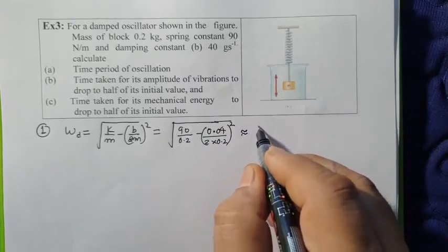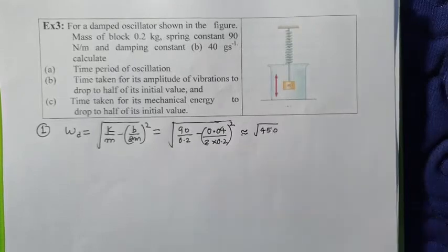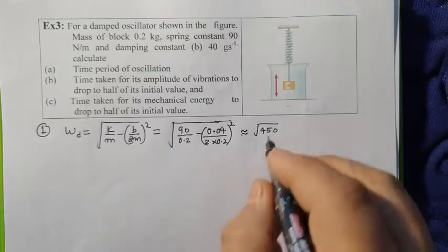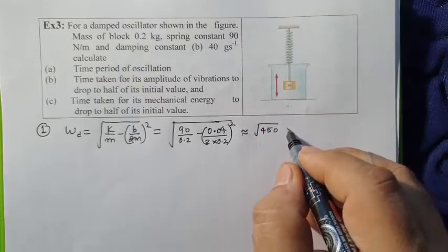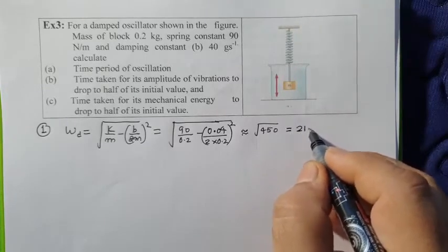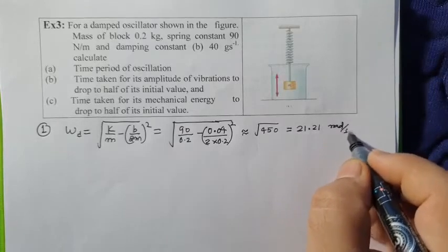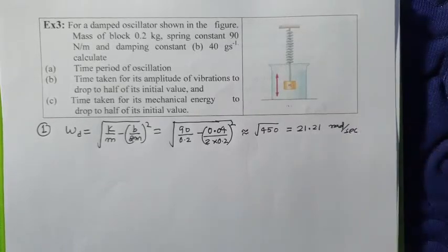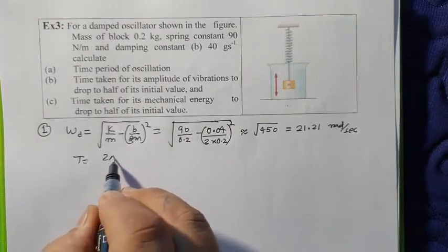This is nearly under root of 450, it will be nearly under root of 450, so this value is 21.21 radian per second. This value will be omega. If we calculate the time period from here, time period will be 2 pi by omega.